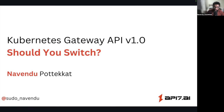Hello and welcome to this video on the Kubernetes Gateway API, specifically about the v1.0 release. The v1.0 release has been around for a couple of months now. I have been wanting to do this video for a while — I wrote a blog post on it a couple of months back, and now I thought it's time to create a video and talk more about it. Hopefully this will give you an idea about the Kubernetes Gateway API and answer the question whether you should switch to it from the Ingress API.